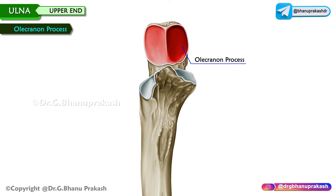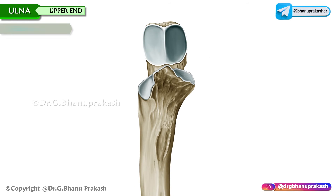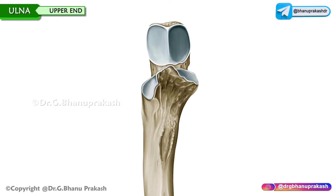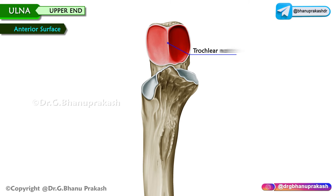Olecranon process. It is located in the uppermost part of the ulna and is bent forwards to form a beak-like projection. It occupies the olecranon fossa of the humerus during elbow extension. It has six surfaces. The anterior surface forms part of the trochlear notch and is concave, covered with articular cartilage. Below, it is continuous with the coronoid process.